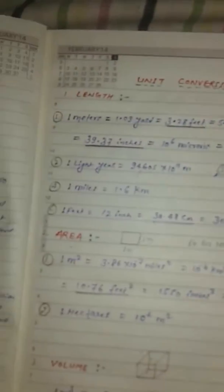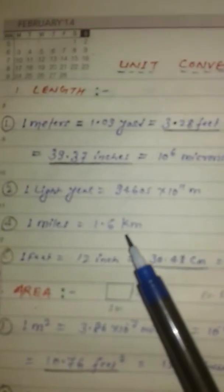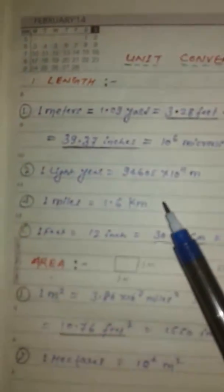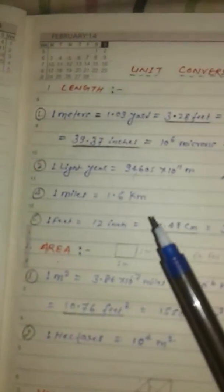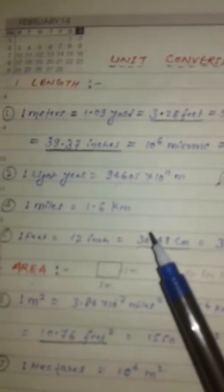One mile is equal to 1.6 kilometers. Next one is one foot, which is very important and practical. One foot is equal to 12 inches, 30.48 centimeters, or 304.8 millimeters.